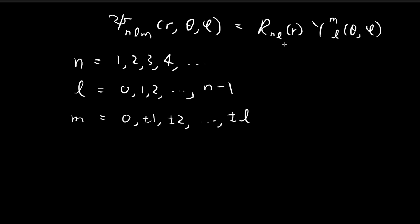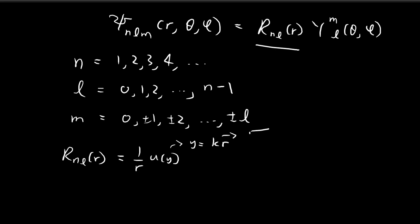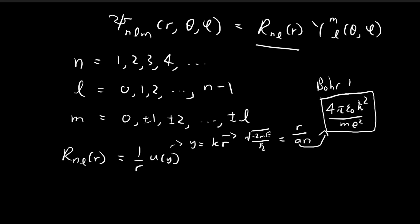For the electron in the hydrogen atom, the radial component is equal to (1/r) × u(y), where y = kr, and k itself is equal to √(−2mE)/ℏ. There is also a different way to express y. By substituting in the expression for the energy levels, y can also be written as r/(an), where a is a shorthand for a collection of symbols that we call the Bohr radius — the same value Niels Bohr produced in his model.